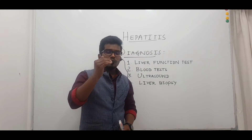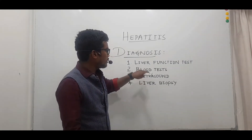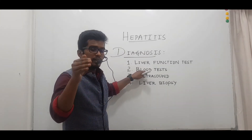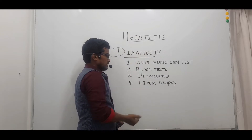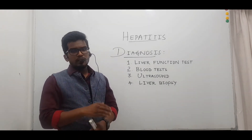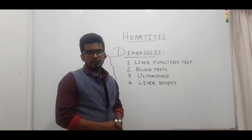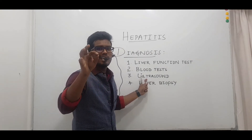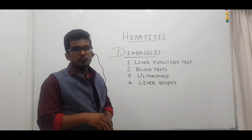Moving on to the second diagnostic test, we have blood tests. If the doctor suspects abnormality in liver function, he will go for blood tests to check whether the person has the hepatitis virus. Further, we have ultrasound, which takes internal images of abdominal organs. The doctor will examine whether the liver is enlarged, whether there is scarring or damage of liver tissue, or any fluid accumulation in the abdominal region.